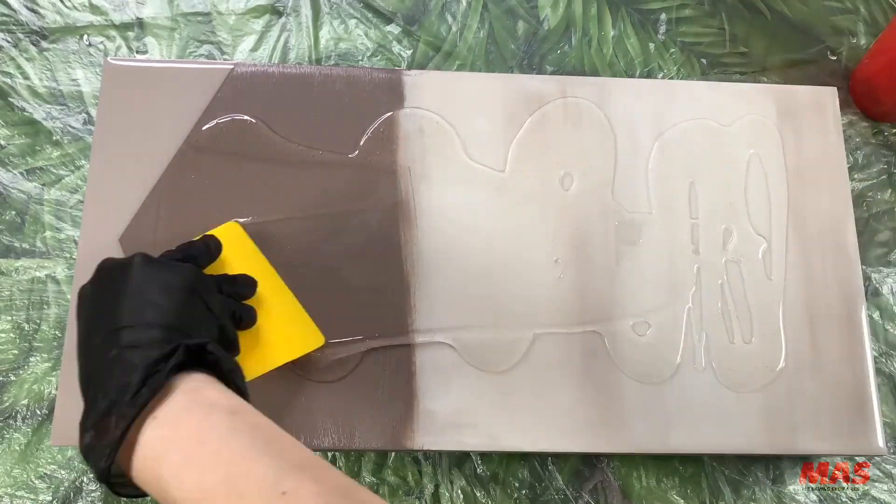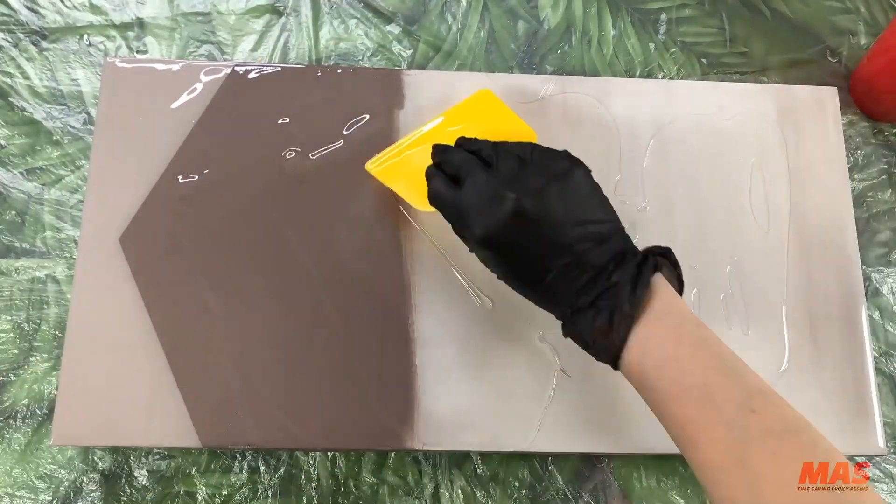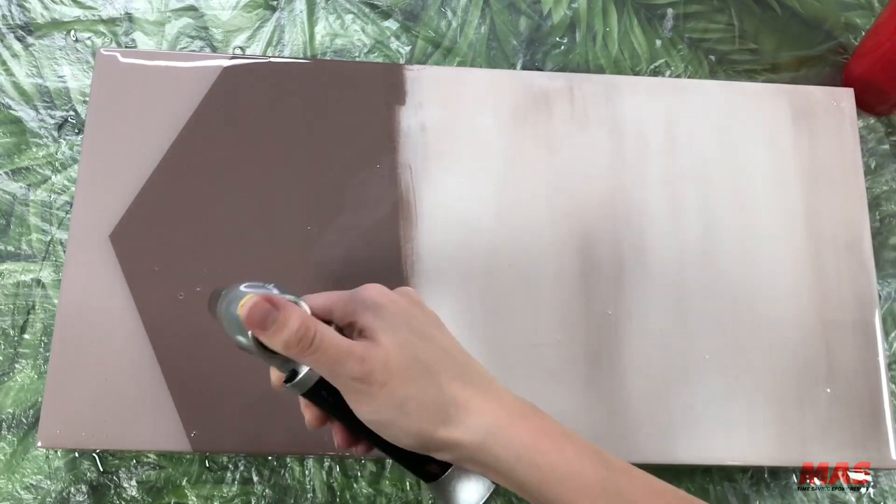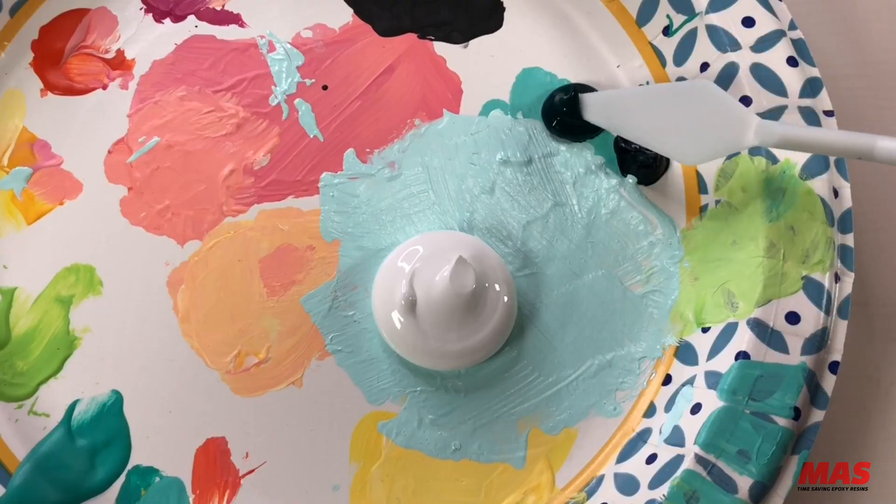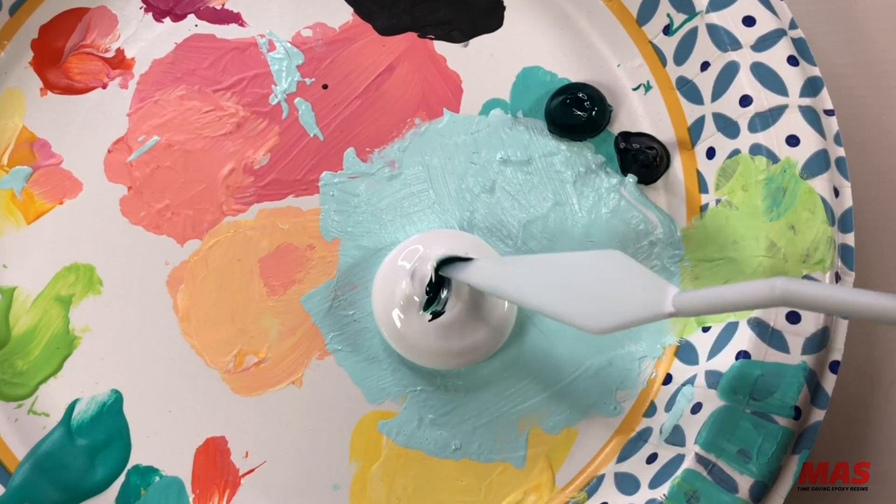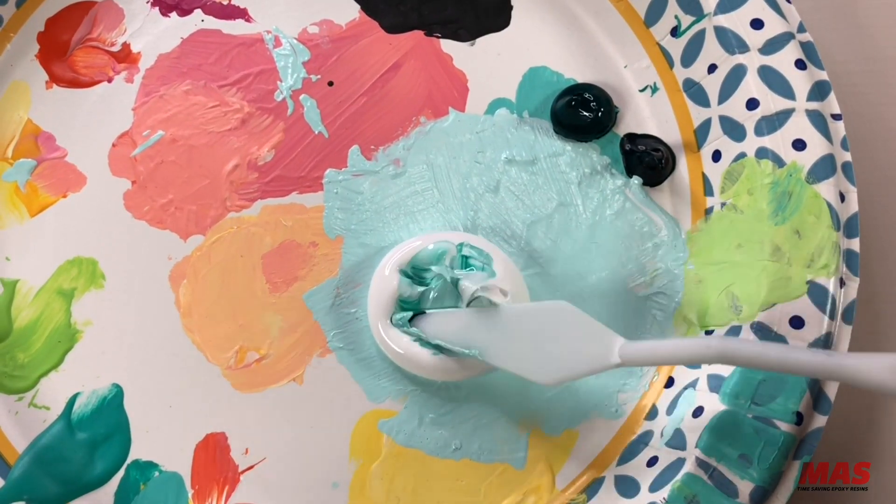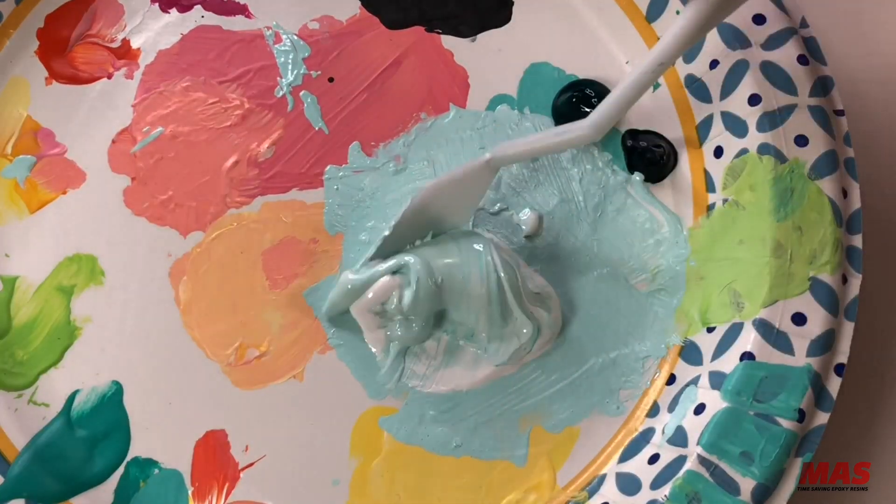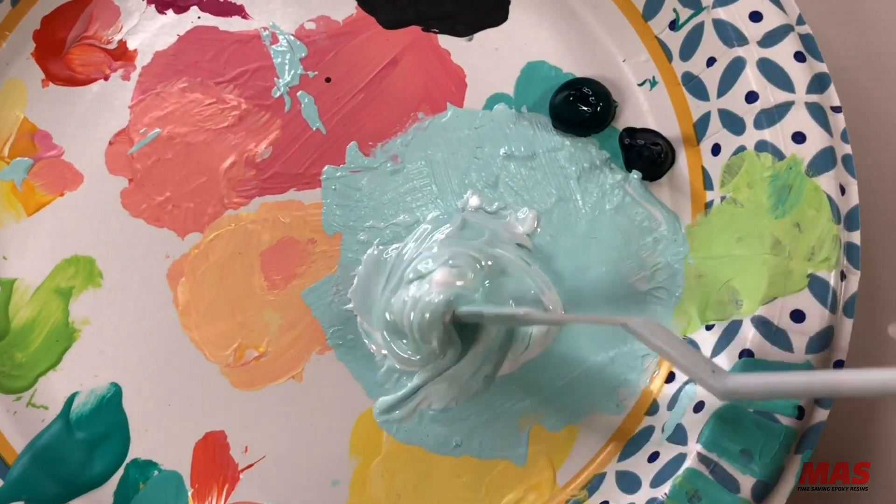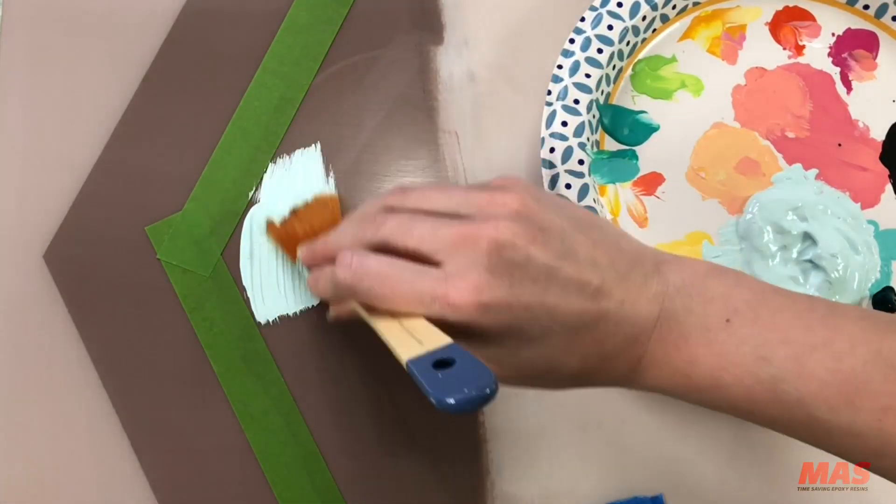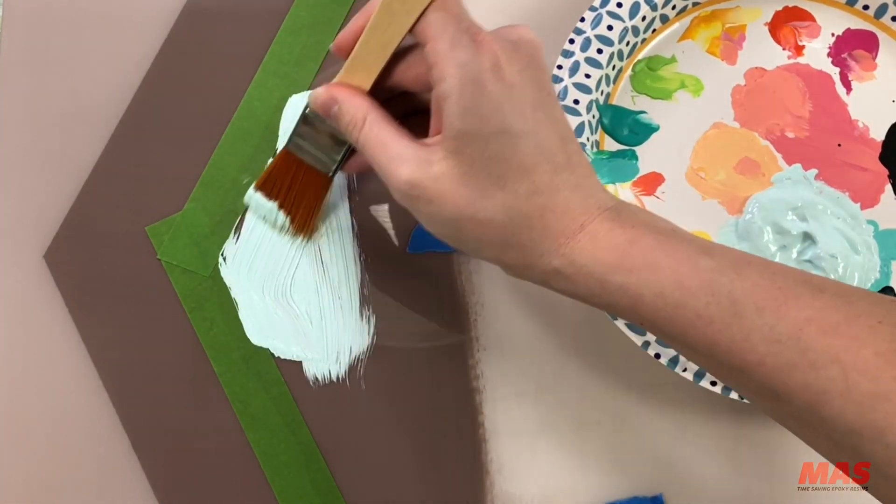Once this layer has completely dried repeat the previous steps alternating between your epoxy flood coat and painting your chevrons. Also I just have to point out look how squishy that paint is it's just like a little squish of love. Okay I'll compose myself I'm sorry but it just had to be said.